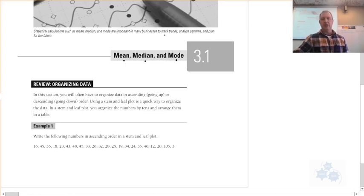So organizing data. Let's just review this. In this section, you'll often have to organize data in ascending, so that is an order that is going up. Or descending, that is going down. Using a stem and leaf plot is a quick way to organize the data. In a stem and leaf plot, you organize the numbers by tens and arrange them in a table.